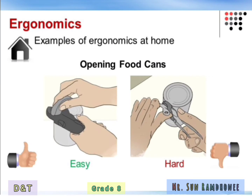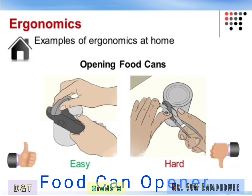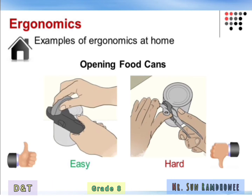Now we are going to look at examples of products that we use at home. The first product is a food can opener. We can see that one product is easy to use. Can you tell why one food can opener is easy to use and why the other one is hard to use? If you have come up with the answer that one food can opener requires more effort whereas the other one requires less effort, then you have got the right answer.